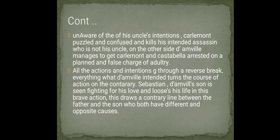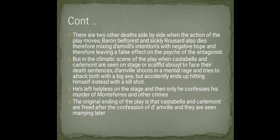All the actions and intentions go through a reversal. Everything D'Amville intended turns the course of action to the contrary. Sebastian, D'Amville's son, is seen fighting for his love and loses his life in this brave action — drawing a contrary line between father and son, who have opposite causes. Two other deaths occur: Baron Belforest and the sickly Roussard also die, further undermining D'Amville's intentions.